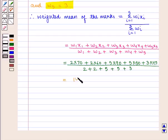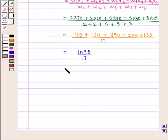Therefore, we get 140 plus 120 plus 450 plus 250 plus 135 whole upon 17 which is equal to 1095 by 17 that is 64.41.